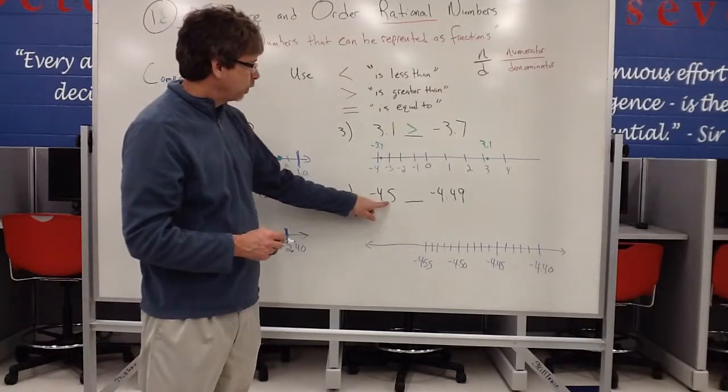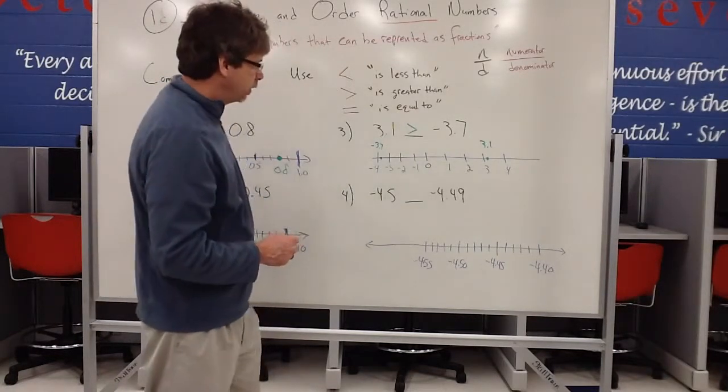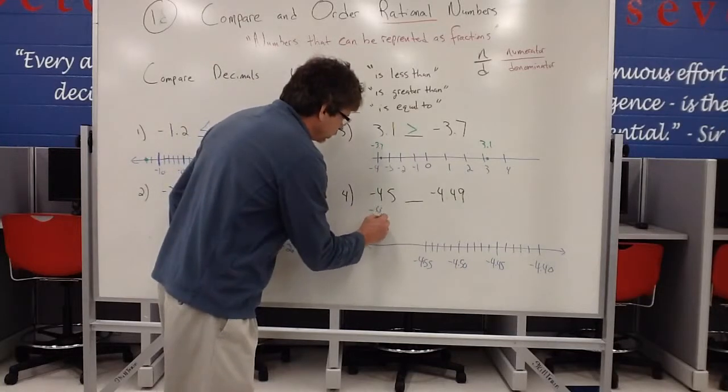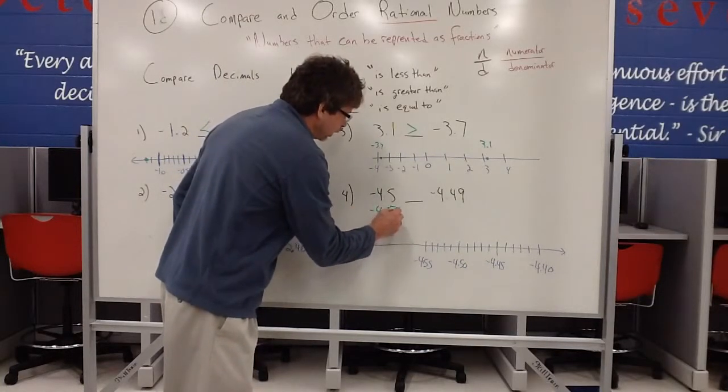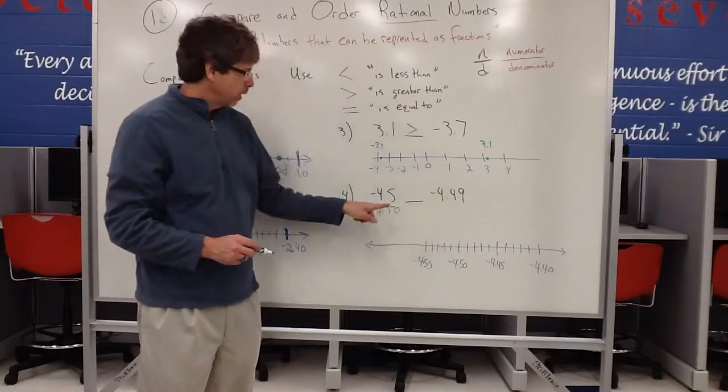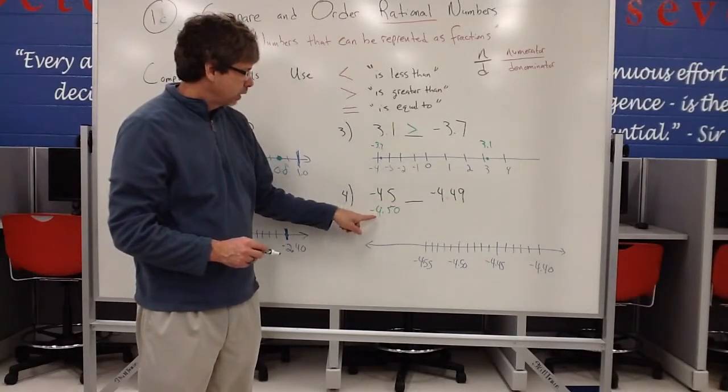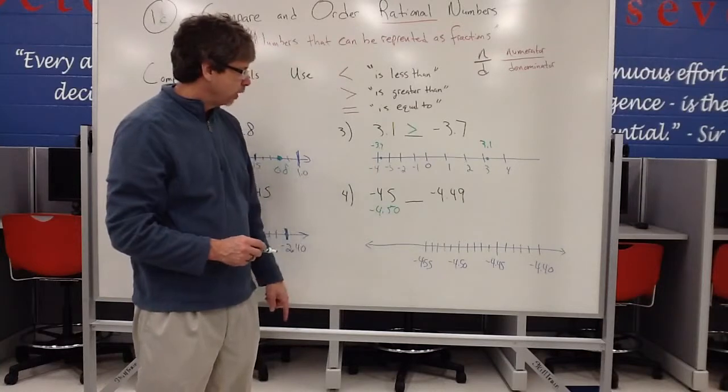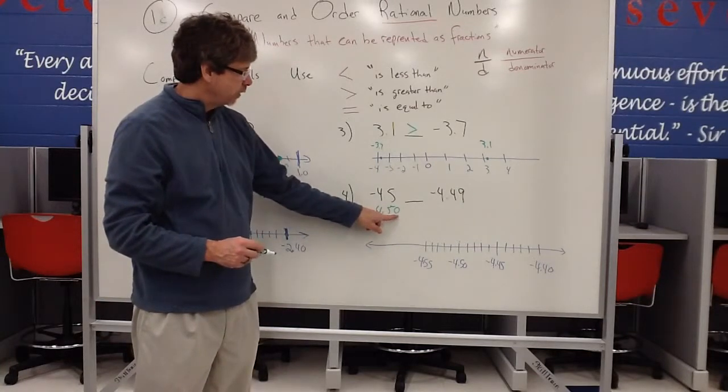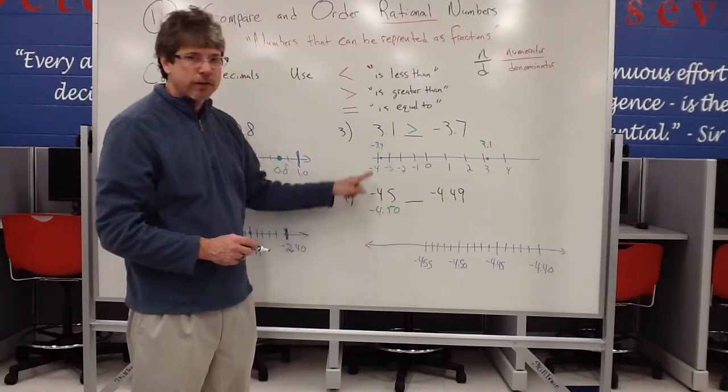Now if I'm comparing negative 4.5 to negative 4.49, it's a good idea to make them the same decimal place. So it's a good idea, since this goes out to the hundredths place, go ahead and add a trailing zero here, and change that to negative 4.50 or negative 4 and 50 hundredths. These are still equivalent because you haven't changed the place values.